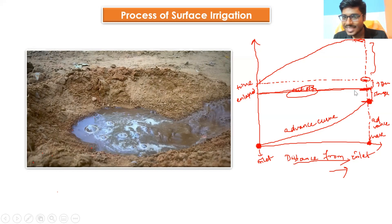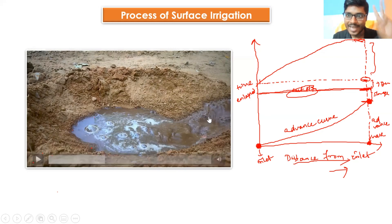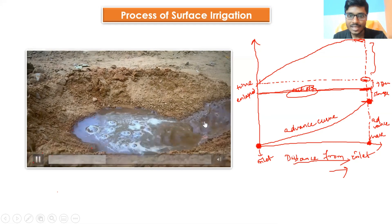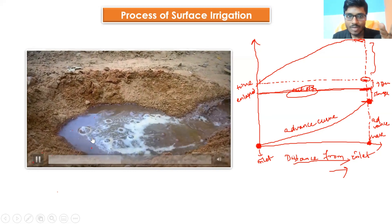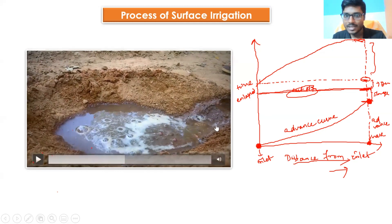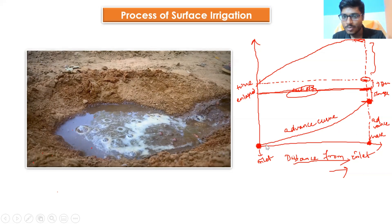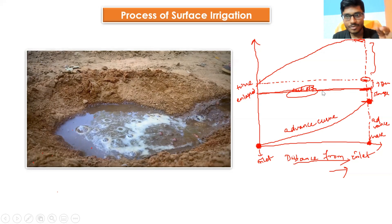When water reaches the end of the field and the supply is still not stopped, water will start accumulating at the end of the field. This period is known as the storage period or ponding stage. In this video, we are at the second stage — the ponding stage. Water supply is still ongoing and water is accumulating.